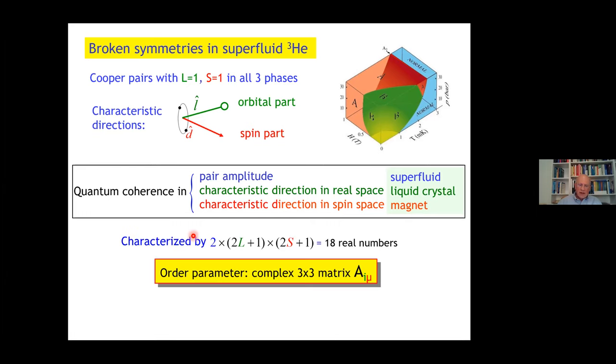This is characterized by 18 real numbers, namely 2 because the superfluid has amplitude and phase, 2L plus 1 for L equal to 1 is 3, times 2S plus 1 for S equal to 1 is 3, so 2 times 3 times 3, 18 real numbers, which can be assembled into a complex 3 by 3 matrix with two indices, one in real space and one in spin space.